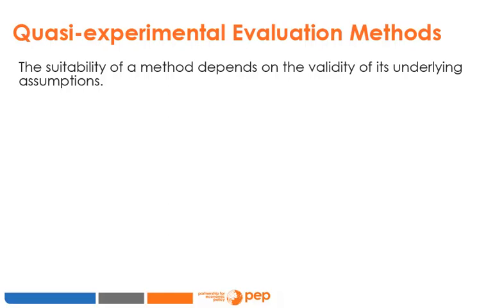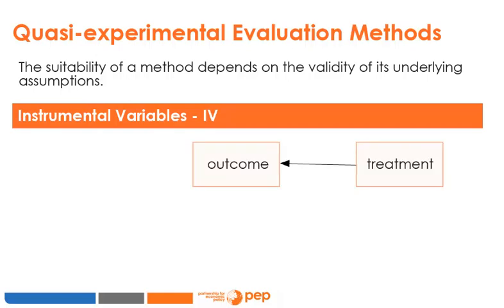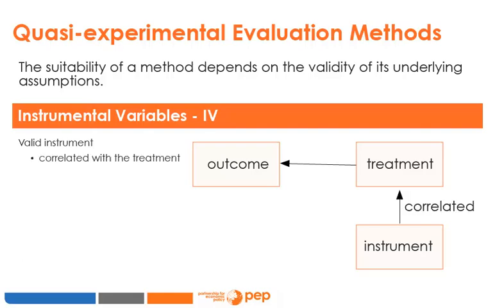Which evaluation method should you choose? Looking at your data, you can ask yourself which of the assumptions built into each method are the most plausible. The Random Selection Method or RCT requires that assignment to treatment and control groups is random. The Instrumental Variables Method or IV requires a valid instrument — a variable that is correlated with the treatment, meaning it is a major determinant of the probability of benefiting from the program, and which is also exogenous.